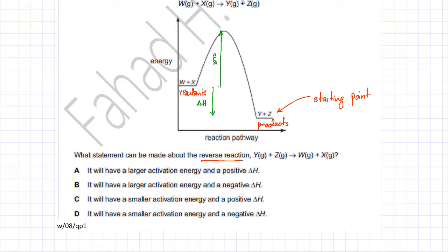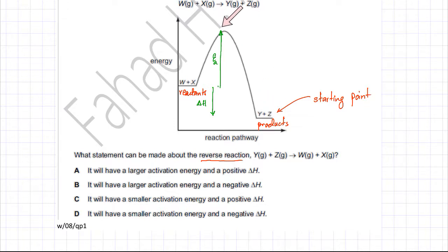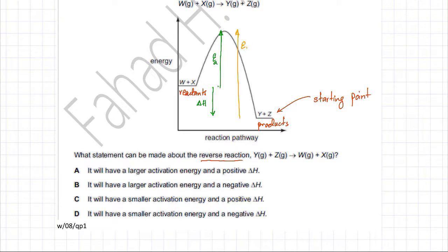Now for the reverse reaction: you start from the products and try to reach the reactants. The activation energy for the reverse reaction is the amount of energy that needs to be gained before the reaction can proceed — starting from the products and climbing up to the transition state. This is the activation energy for the backward reaction.